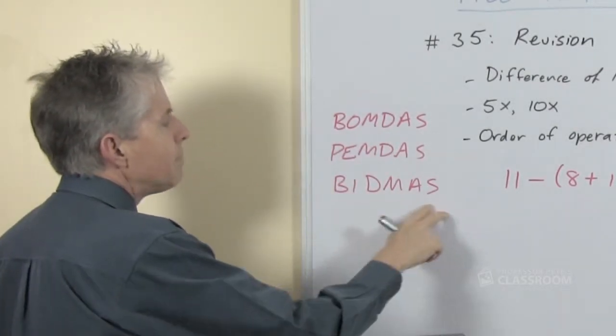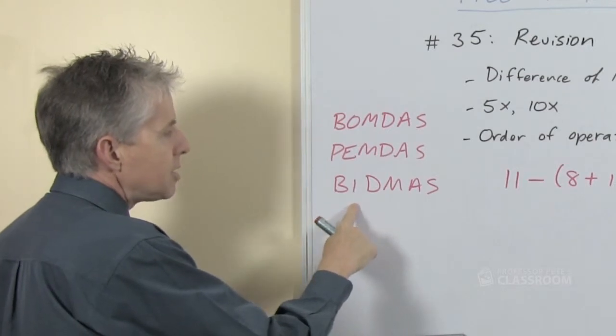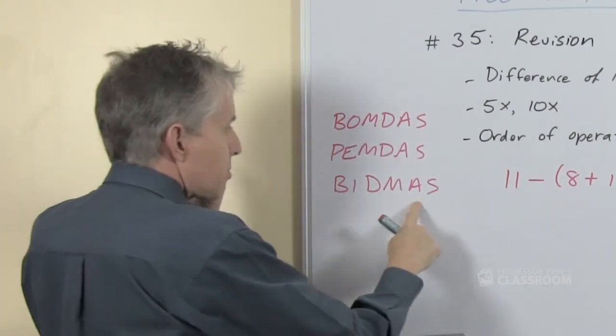And I've come across BIDMAS which apparently is brackets, indices, divide, multiply, add, subtract.